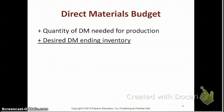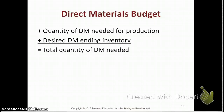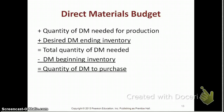To that, you add your desired direct material ending inventory. Just like for production, you want to have a certain percentage of your following month's production as your desired ending material. When you add those two together, you get the total quantity of direct materials needed. Then you subtract your direct materials beginning inventory to come up with the quantity of direct materials to purchase. Once you have that quantity, you multiply it by the cost of your direct materials, giving you the total cost of purchase.